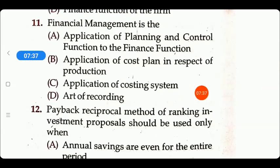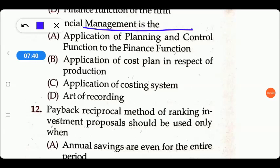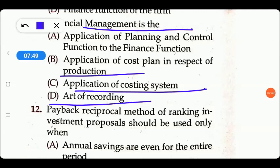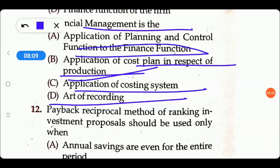Next question: financial management is the application of planning and control functions to the finance function, application of cost plan in respect of production, application of costing system, or art of recording? Art of recording relates to bookkeeping; application of costing system and cost plan relate to cost accounting. So option A — application of planning and control to the finance function — is the right answer.